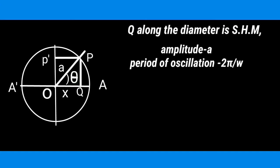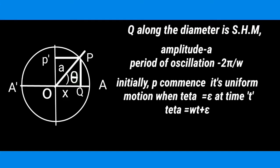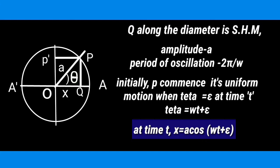Therefore the motion of Q along the diameter is SHM. The amplitude is A, and the period of oscillation is 2π/omega. Initially P commences its uniform motion when theta is epsilon. At time T, theta equals omega t plus epsilon. Therefore the displacement is X equal to A cos(omega t plus epsilon), proving the projection of P is simple harmonic motion.